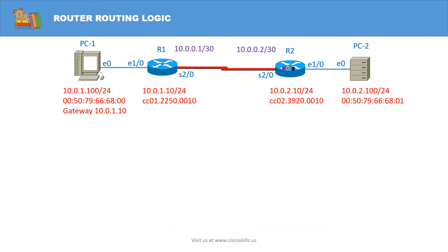As soon as the HDLC frame arrives at Router 2 via the interface S20, because the interface S20 is a serial interface, Router 2 knows that the frame is for itself, so it will process the frame. First it checks the frame check sequence field in the trailer of the frame to see if there are any errors. In this case, let's assume it doesn't find any errors, so it will de-encapsulate the frame to get the IP packet.